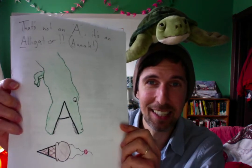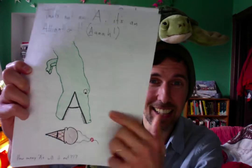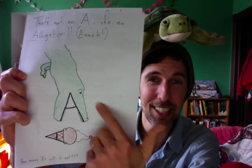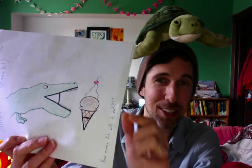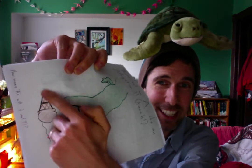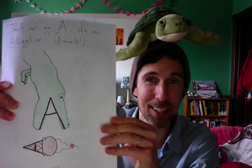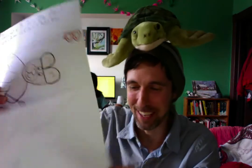So that's complicated, but here's an example. This book says that's not an A, it's an alligator. And you can see there's an A right there. But then I turned it into the mouth of an alligator who's eating an ice cream cone, and that ice cream cone has an A in it. So that one's kind of advanced.